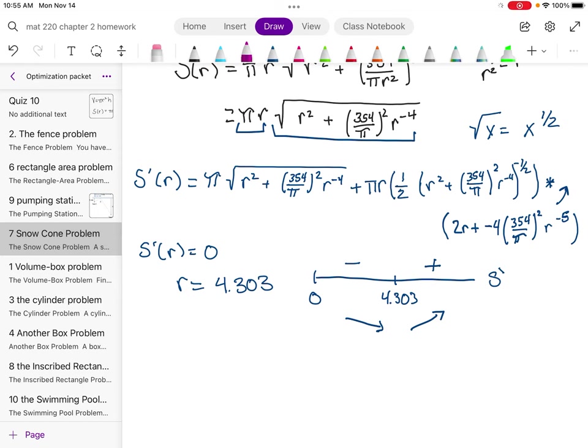So I remember h is equal to 354 over pi r squared. And so h would be equal to 354 over pi and then that 4.303 squared, which is about 6.086 centimeters.